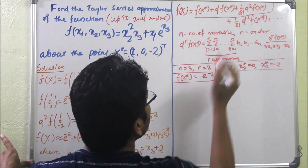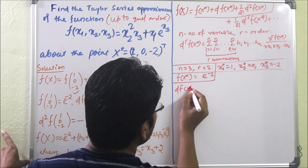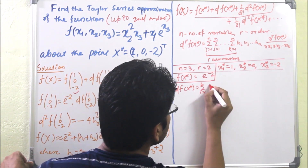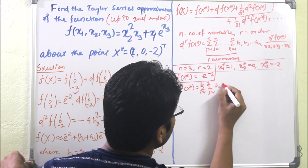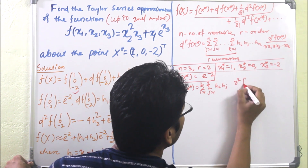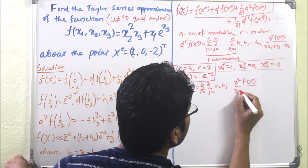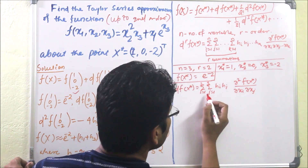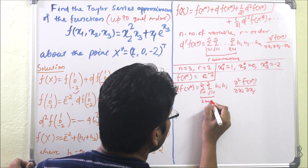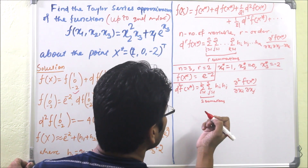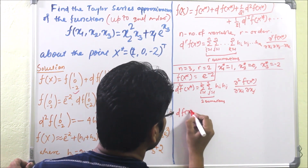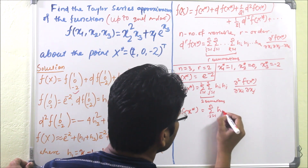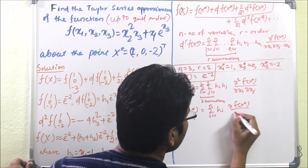Next we have to find df(x*). In the general form, df(x*) is written with r equal to 1, so there is one summation from i equal to 1, 2, 3. We can write df(x*) as the sum over i from 1 to n of h_i times ∂f(x*)/∂x_i. Expanding this gives h1 · ∂f(x*)/∂x1, plus h2 · ∂f(x*)/∂x2, plus h3 · ∂f(x*)/∂x3.